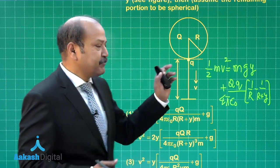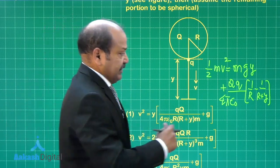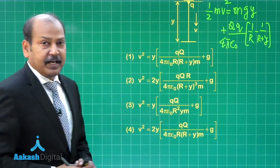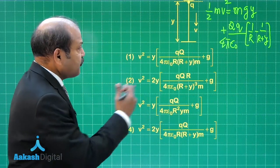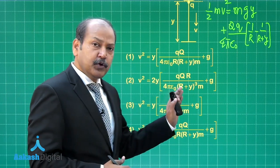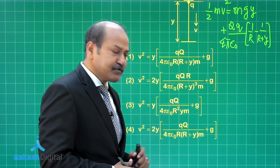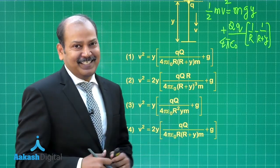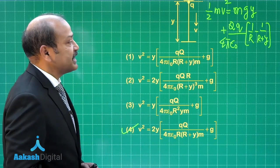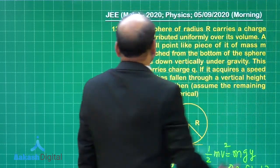We can now solve it for v. If you solve it for v, option 4 matches with the expression for v square. That means v square comes out as 2y into small q capital Q divided by 4 pi epsilon 0 capital r into r plus y into m, plus g. So option 4 is correct for this particular question, and we can now go to question number 14.